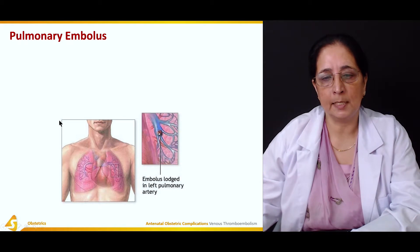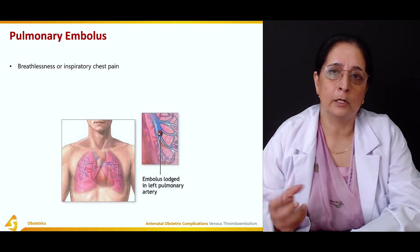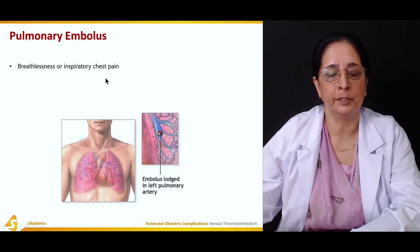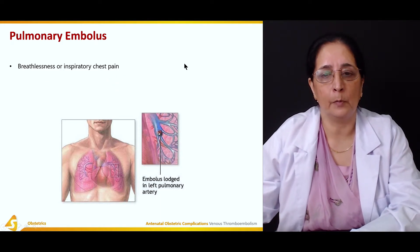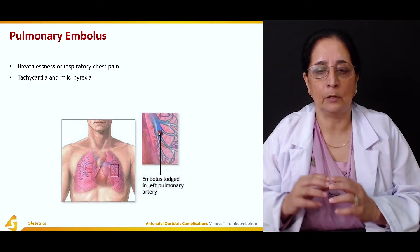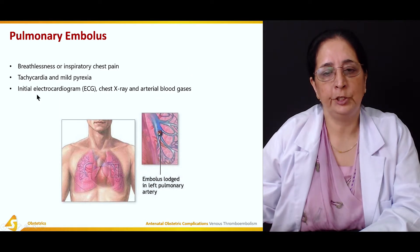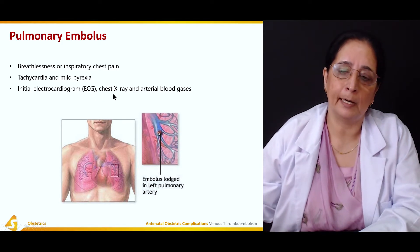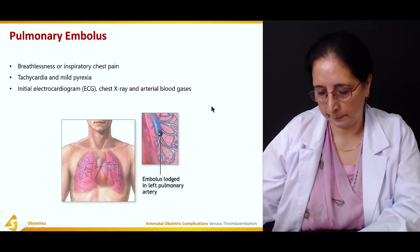Pulmonary embolus is the dislodging of a blood clot causing obstruction of pulmonary blood vessels. There is breathlessness, inspiratory chest pain, tachycardia, and fever — common symptoms of pulmonary embolism. Initial investigations include ECG, chest X-ray, and arterial blood gases to assess blood gas levels in the pulmonary vessels.